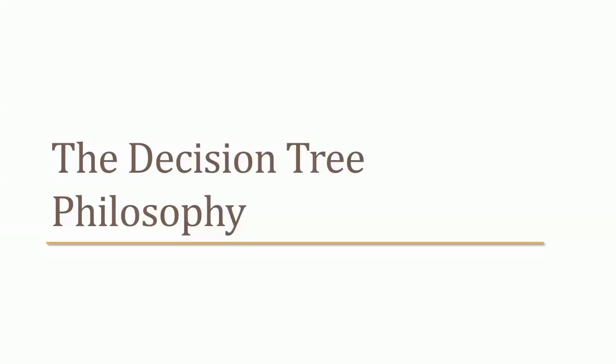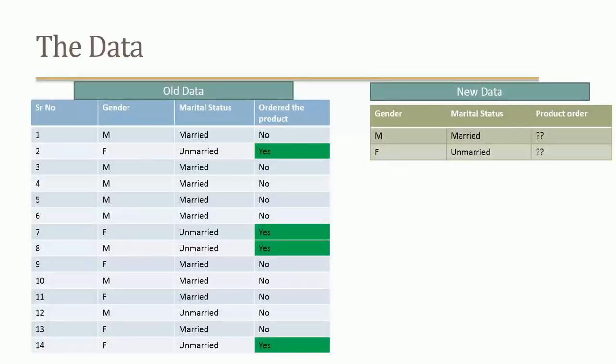Here is the decision tree philosophy. The problem is we have attributes like gender and marital status, and we already know historically whether the customer has ordered the product based on these attributes. Now, given new data with gender and marital status, can we guess whether the customer will order the product or not?